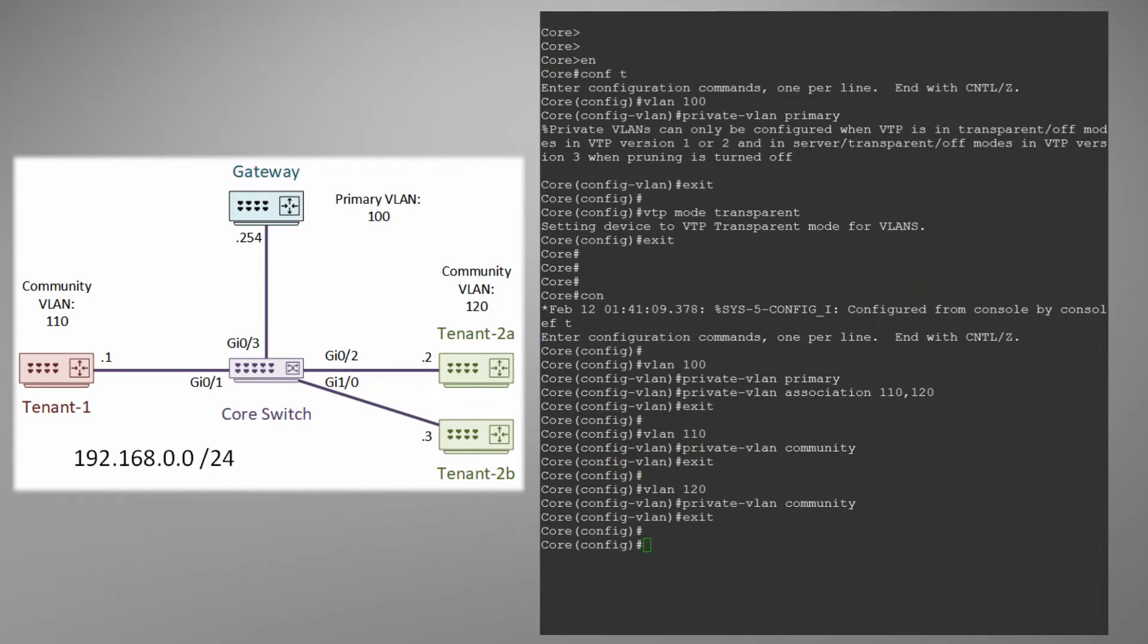The VLANs are done so now we can configure the ports that the devices connect to. We'll start with the host port for Tenant 1. This should feel fairly familiar to you. We still use the switch port mode command just like we do when configuring access ports or trunk ports. Except this time the mode is private VLAN host.